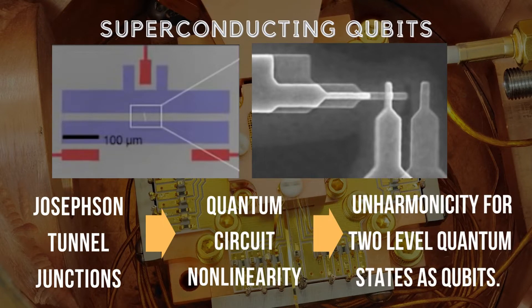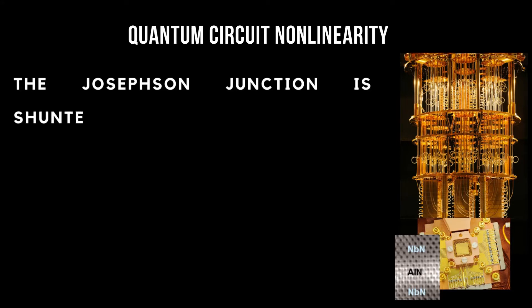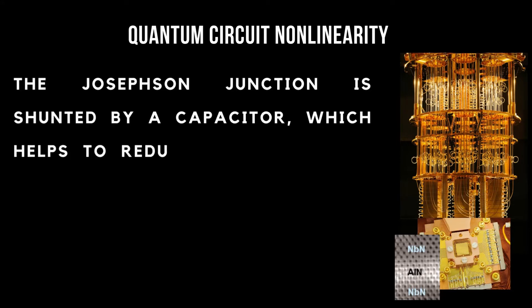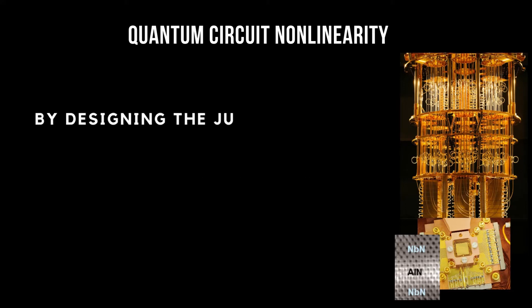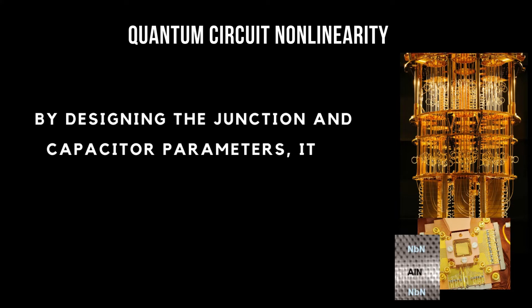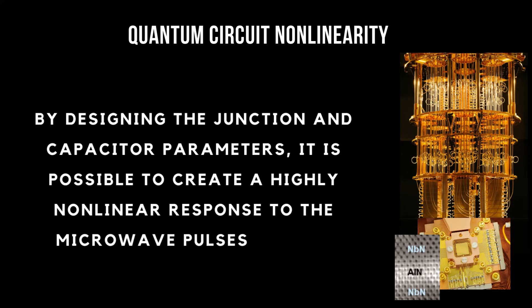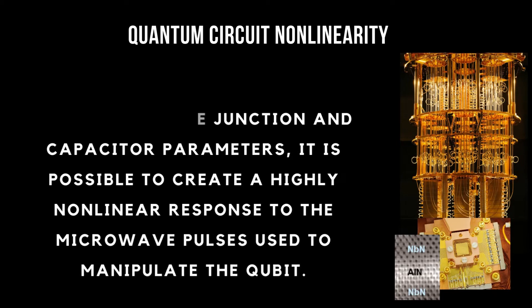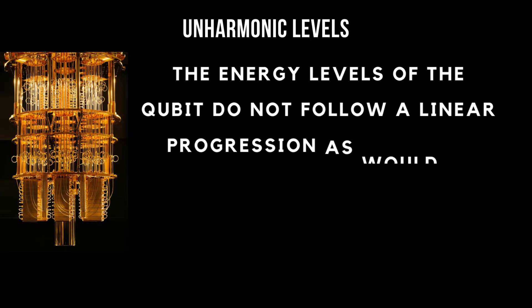Superconducting qubits rely on Josephson tunnel junctions. They are made of two superconducting materials separated by a thin insulating layer, which allows for the tunneling of Cooper pairs between the two superconductors. By applying an external magnetic field to the junction, the energy levels of the Cooper pairs can be manipulated, creating a non-linearity in the quantum circuit. This non-linearity is critical for allowing the qubit to perform quantum computations.